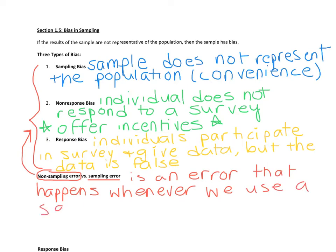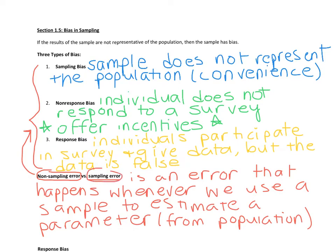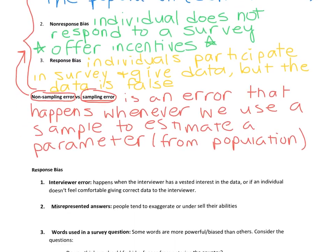Whenever we use a sample to estimate a parameter — a numerical measure of the population — some error is inevitable. For example, if we wanted to find the average height of El Camino students and sampled correctly with everyone telling the truth, if we took a different sample we'd get a different average height no matter what. That's the sampling error. A sample only gives us a ballpark of the parameter, so the sample statistic will rarely ever be exactly equal to the parameter.